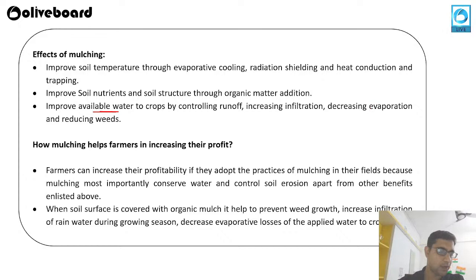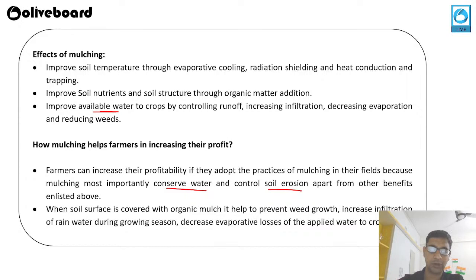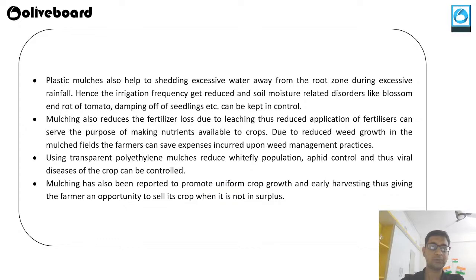The second part of the question is how mulching helps farmers increase their profit. Farmers can increase profitability by adopting mulching because it helps conserve water, control soil erosion, prevent weed growth, increase infiltration of rainwater during the growing season, and decrease evaporative loss applied to crops.